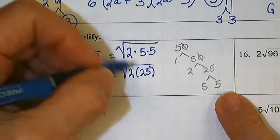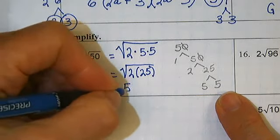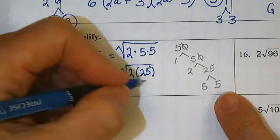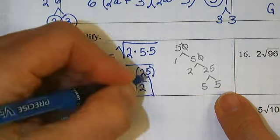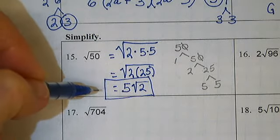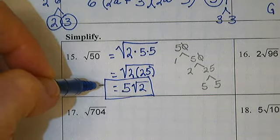The square root of twenty-five is five and what's left? The square root of two. You will love this next year in geometry because you see these all the time.